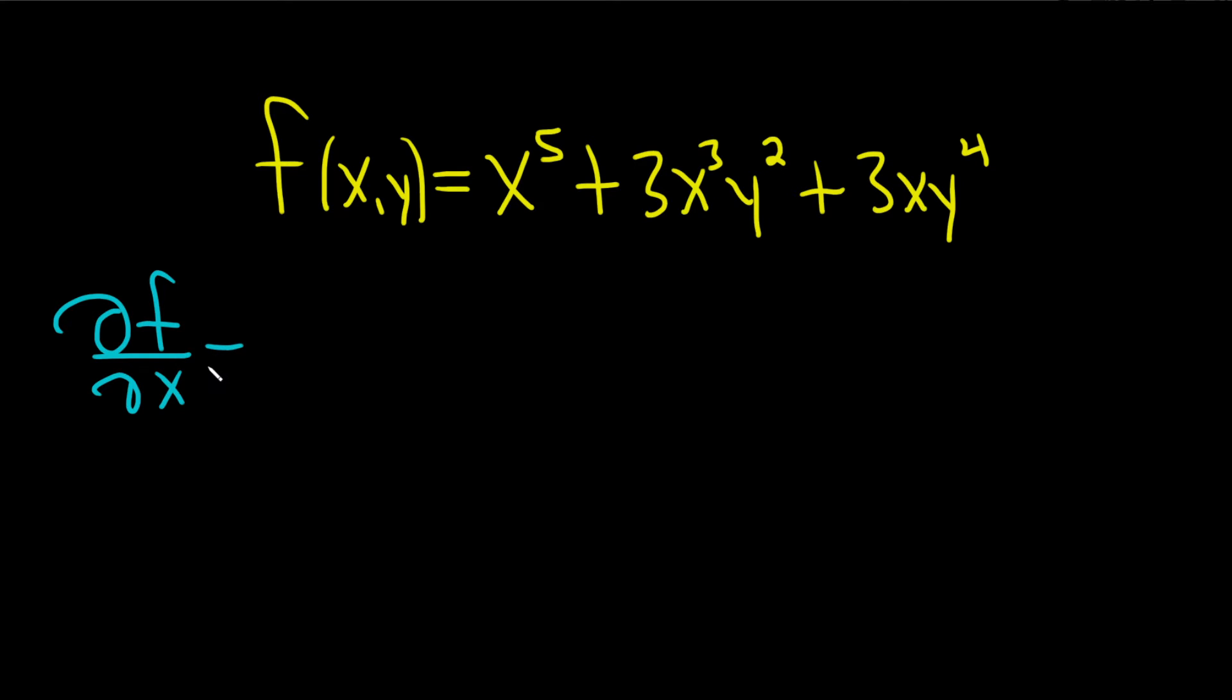So for x to the fifth, we can use the power rule. We'll bring down the 5 and then we subtract 1 from the exponent and that gives us a 4.